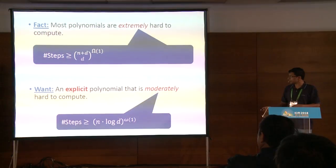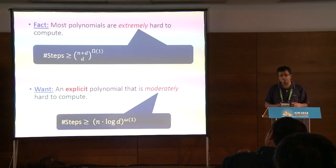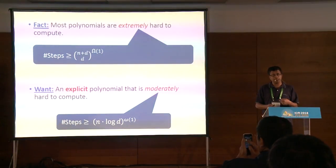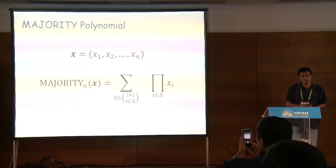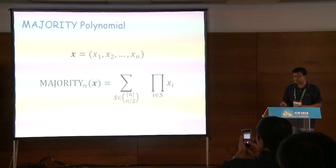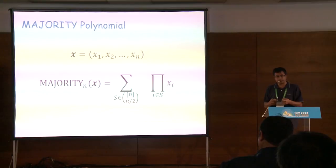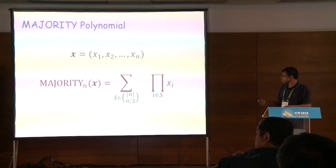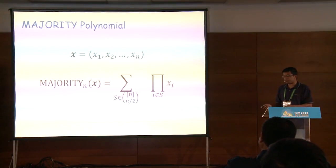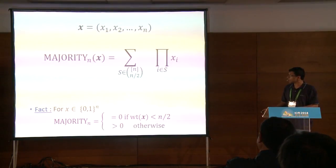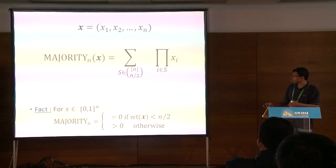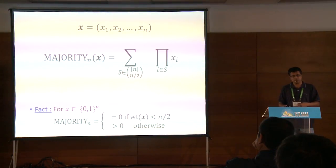Let me define what we mean by an explicit polynomial: it's a polynomial such that the coefficient of any given monomial can be computed efficiently. One example is the majority polynomial — you have an input of length n, you go over all subsets of size n/2 and take the product of the variables in the subset. If the inputs were boolean, the output would be 0 if the number of 1s was less than n/2, and more than 0 otherwise.